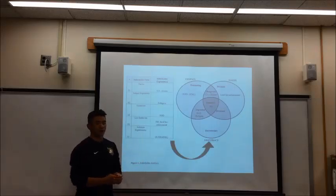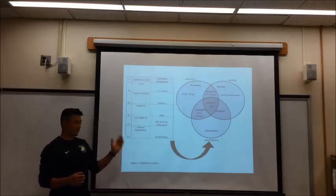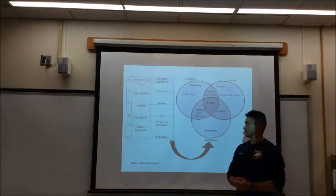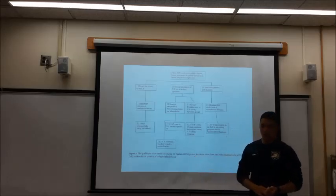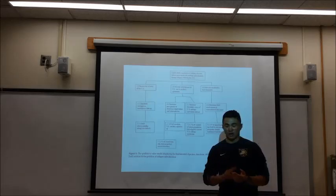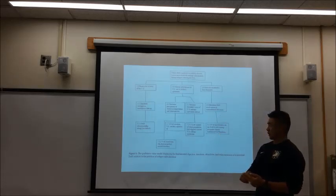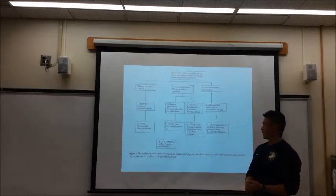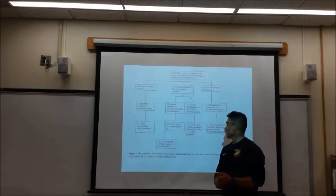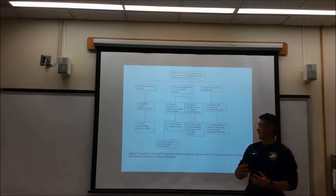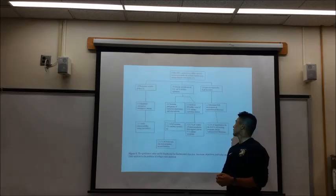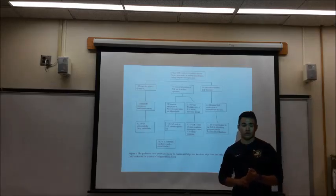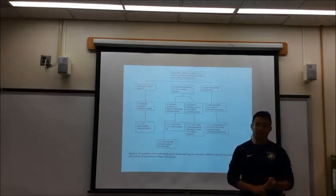This graphic shows our stakeholder analysis — we identify who's important and how important they are. After determining that, we created our value model. We determined that maximizing interagency intelligence sharing is important, that we need to decrease perceptions of American imperialism and Islamophobia, increase favorable views of U.S. military operations abroad, and maximize DOD involvement in non-traditional functions such as education and economic policy.